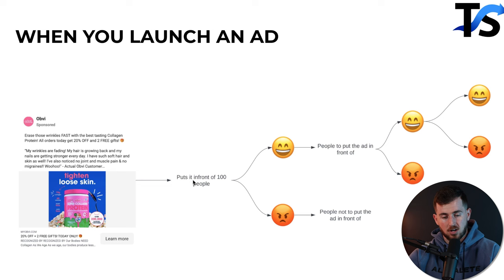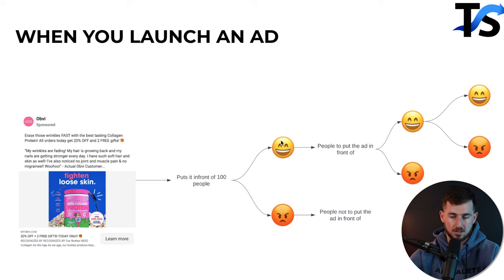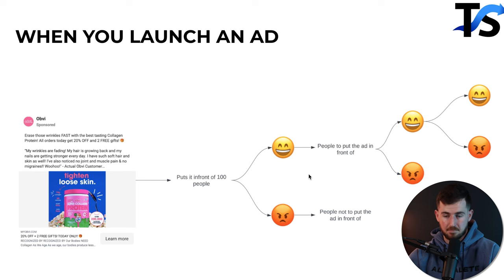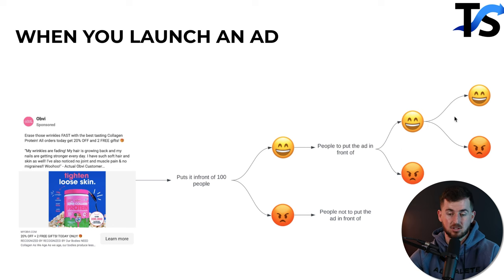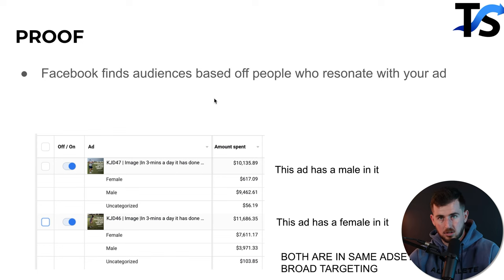When you launch an ad, Facebook puts it in front of a sample of people. Those who stop, it shows more of. Those who scroll past, it shows less to. It keeps improving — finding people who love that ad and expanding to more like them. This is not just during 'learning' phase — Facebook is always improving, even when the ad status shows 'active.' The ad continually gets better at finding its audience over time.